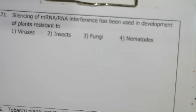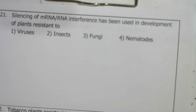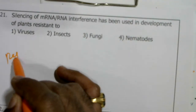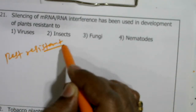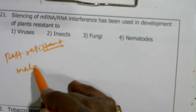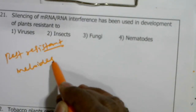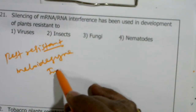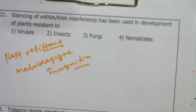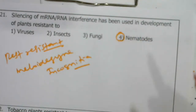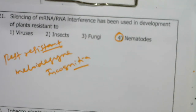Silencing of mRNA or RNA interference has been used in development of plants resistant to the nematode Meloidogyne incognita. RNA interference was developed mainly to produce nematode pest resistance.